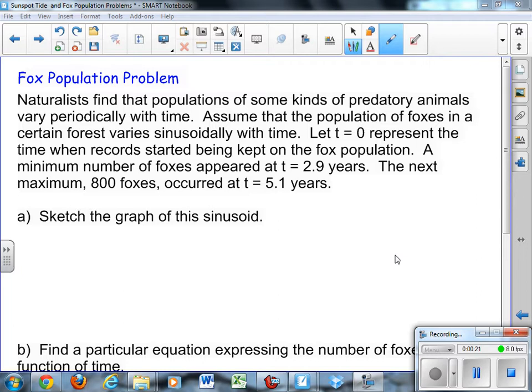For example, let's say these foxes ate a lot of rabbits. If the rabbit population was low, the foxes wouldn't have enough to eat, so the fox population would go down. When the fox population goes down, then the rabbit population is going to go up because there aren't as many foxes to kill them.